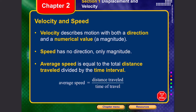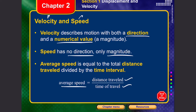Velocity and speed are two separate quantities. Velocity is the rate of change of displacement and describes both direction and magnitude — for example, 50 kilometers per hour east. Speed is the rate of change of distance, and only describes magnitude — for example, 50 kilometers per hour with no direction mentioned. Average speed is distance traveled divided by time of travel.